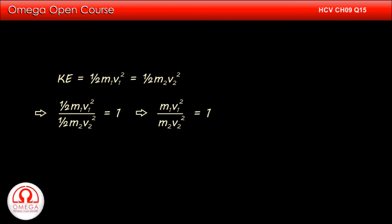Simplifying, we get m1v1 square by m2v2 square is equal to 1. Multiplying both sides by m1 by m2, we get m1 square v1 square by m2 square v2 square is equal to m1 by m2.